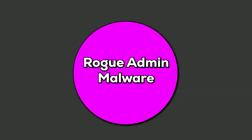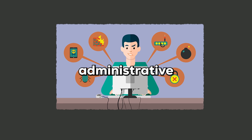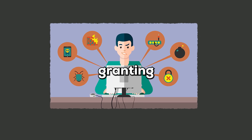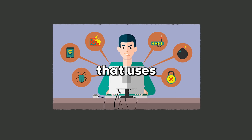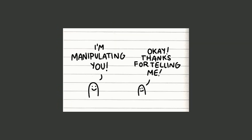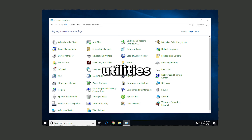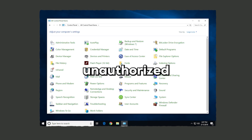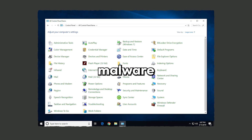Rogue admin malware hides within legitimate administrative tools, tricking users into granting it elevated privileges that it uses to compromise system security. It manipulates system settings and bypasses restrictions, often leading to severe data breaches. Instances of fake admin utilities used to gain unauthorized access illustrate the threat posed by rogue admin malware.